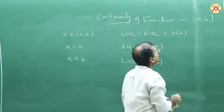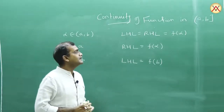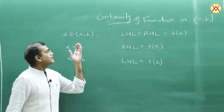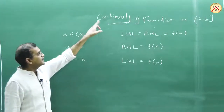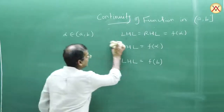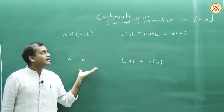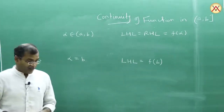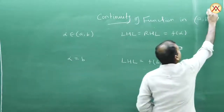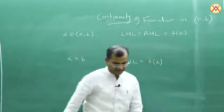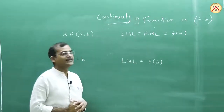Let us take a semi-closed interval. If we are supposed to discuss the continuity of function in a semi-closed interval like (a, b], then we need to discuss interior points and we need to discuss B - we are not interested in A. So continuity in this interval: check at interior points and check at right end point only. Similarly, if we have to discuss continuity of function in open interval (a, b), that discussion will be for interior points only.